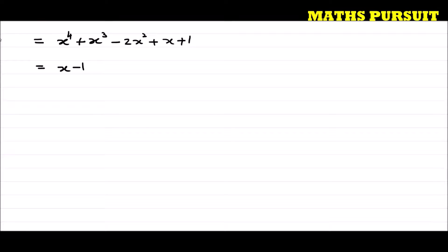Let the first polynomial be p(x) and the second polynomial be g(x). The question is asking us to find the remainder when p(x) is divided by g(x).